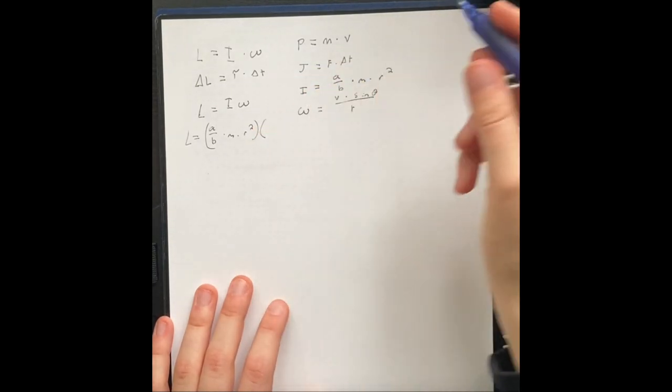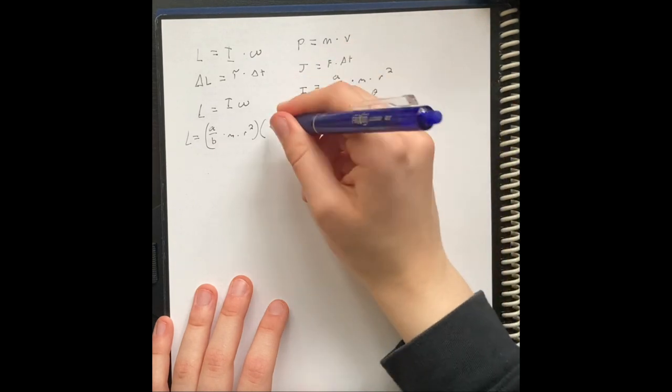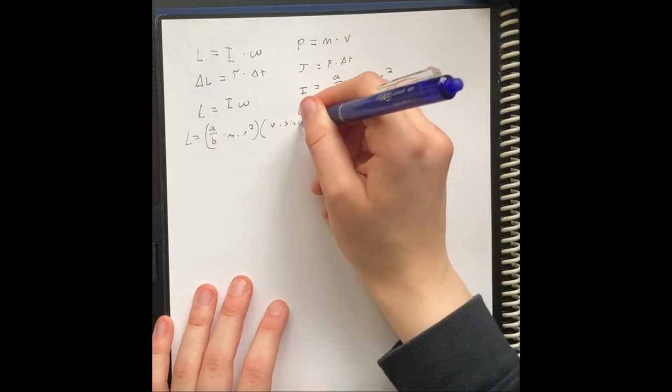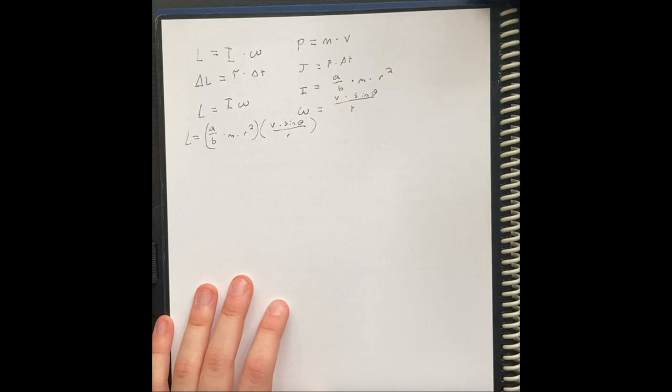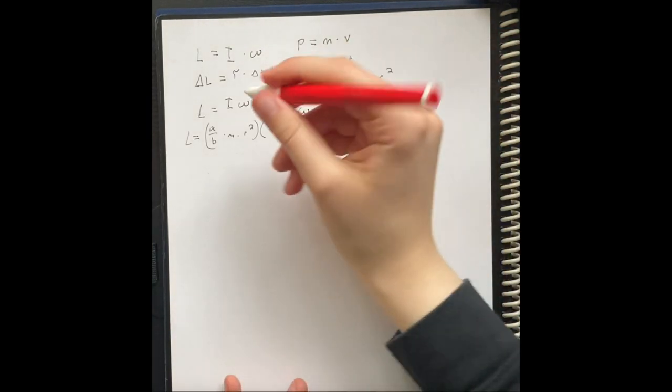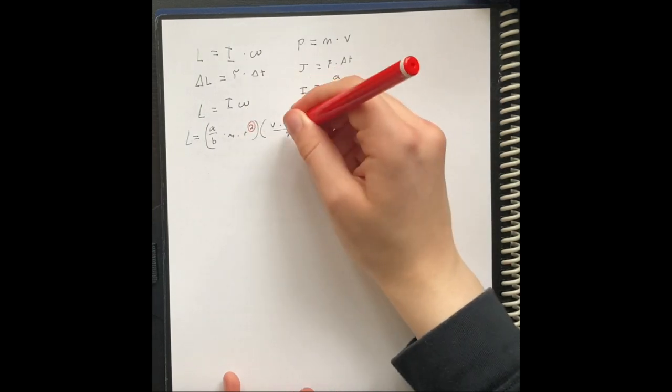It's going to be equal to velocity times sine of theta divided by a radius. And so now, we can simplify this. You may have noticed that there is an r squared, and there is an r in a denominator of a fraction.